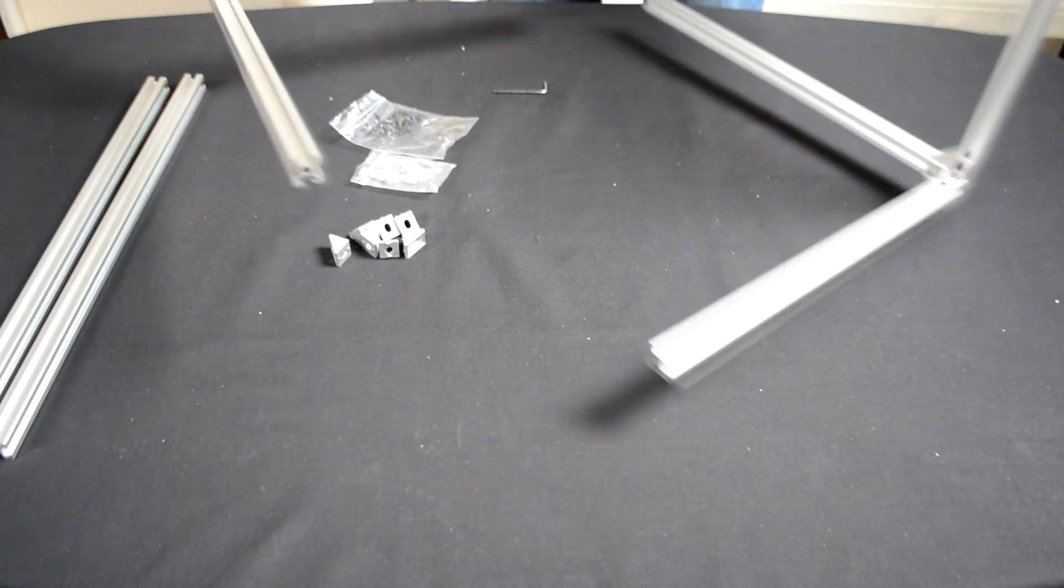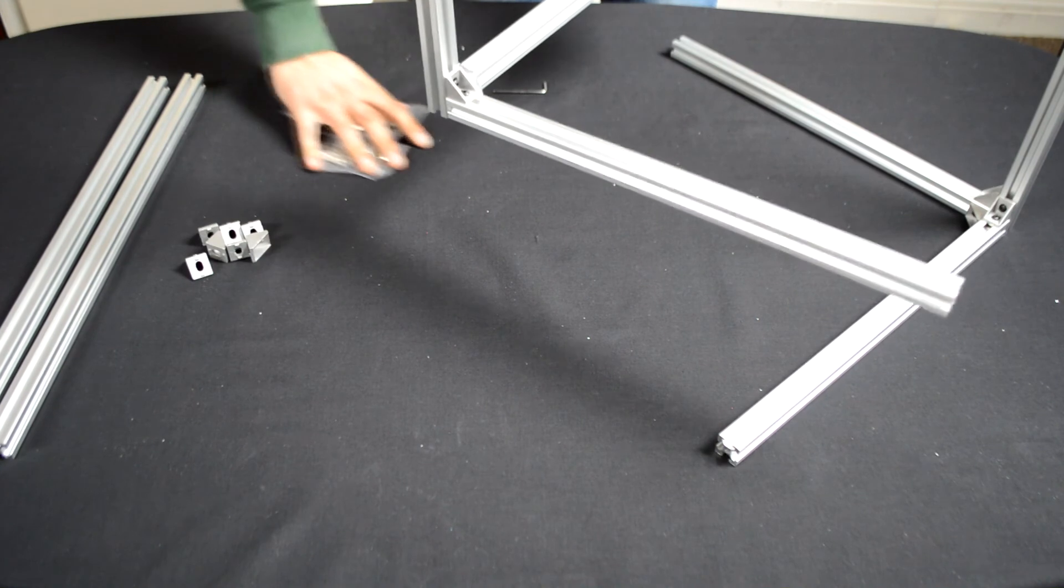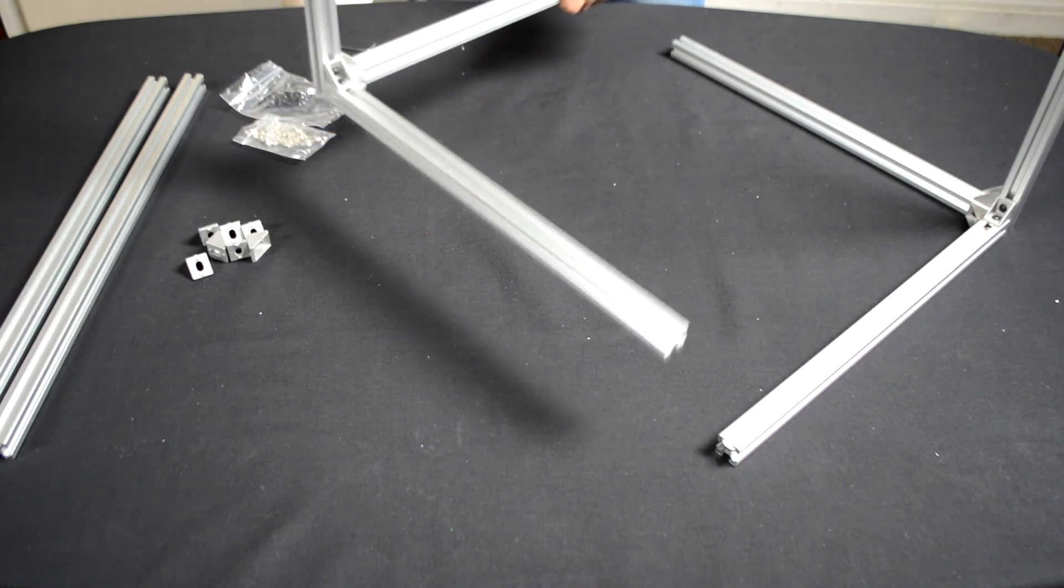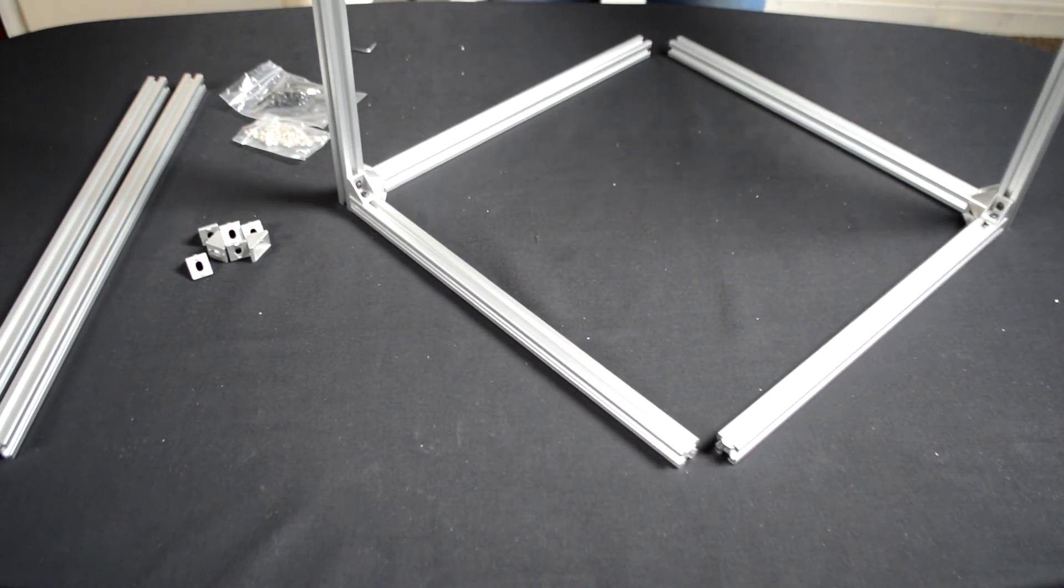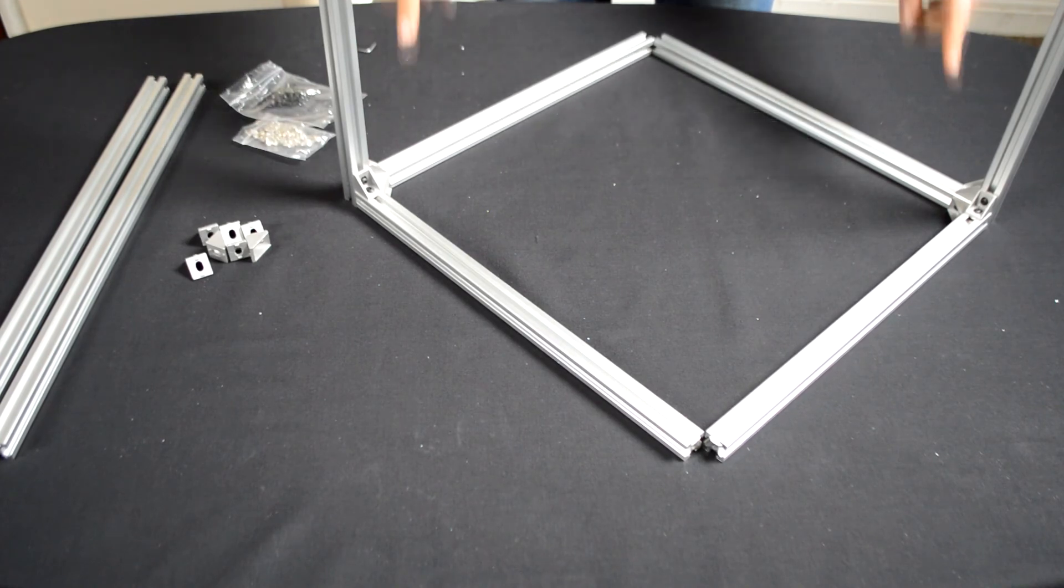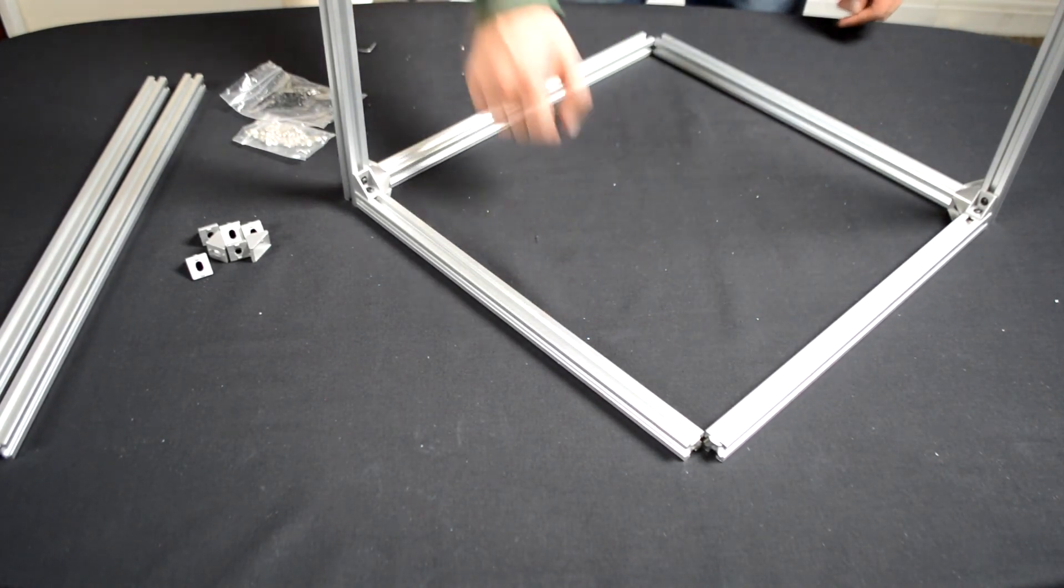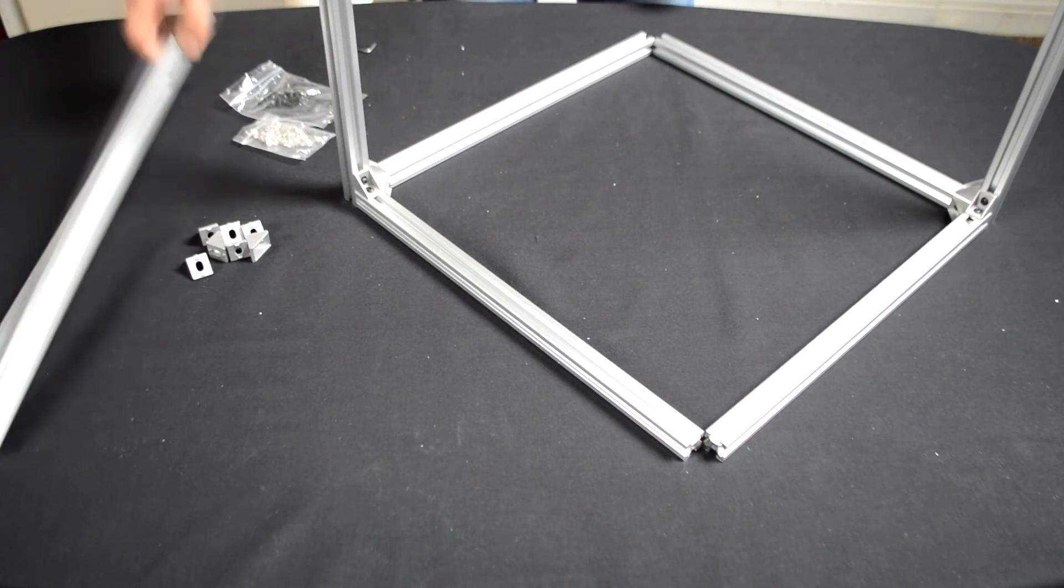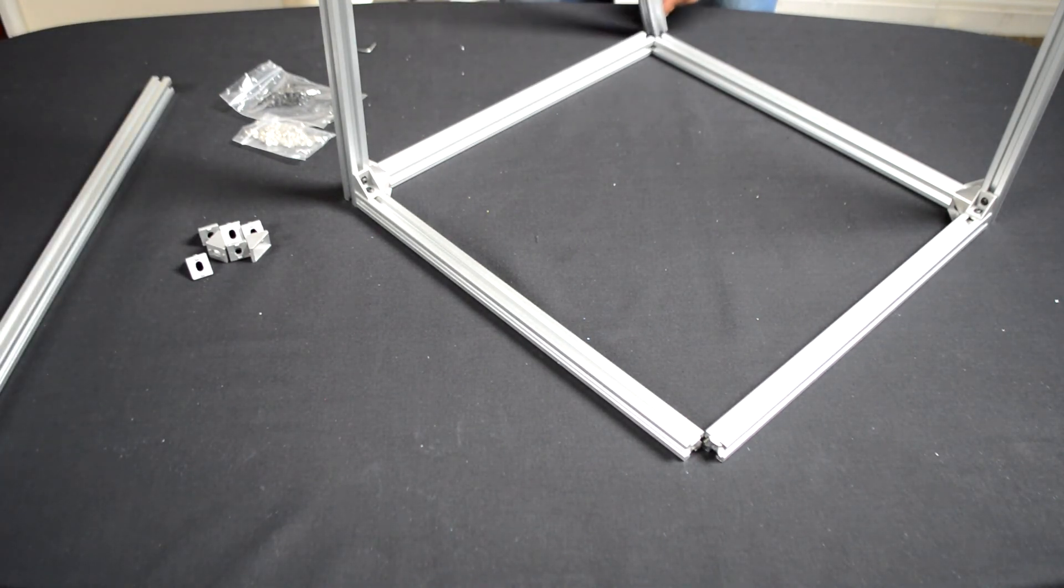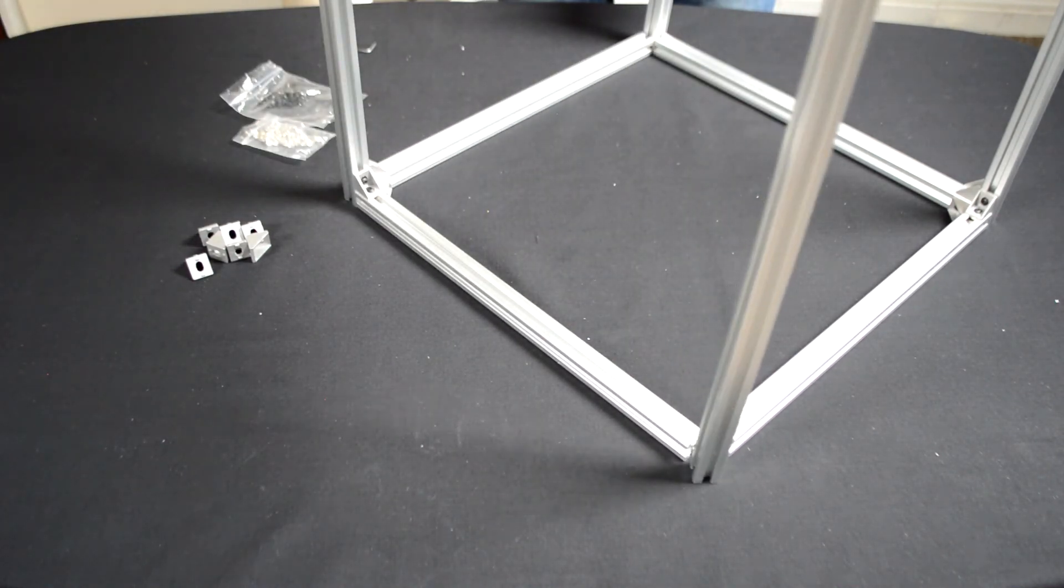Right, so you've hopefully done that twice and then as you can see put them together like this so you have the two 500 millimeter extrusions here and then the four 400 millimeter extrusions there and then it's just a matter of doing the same in this corner and the same in this corner.